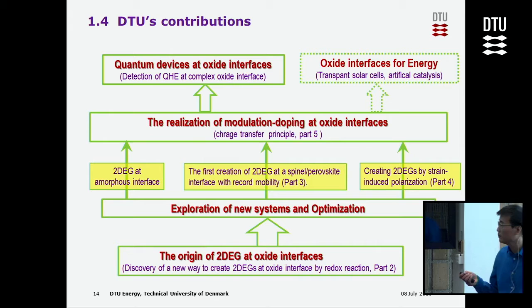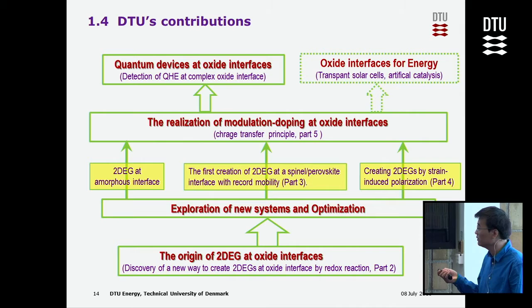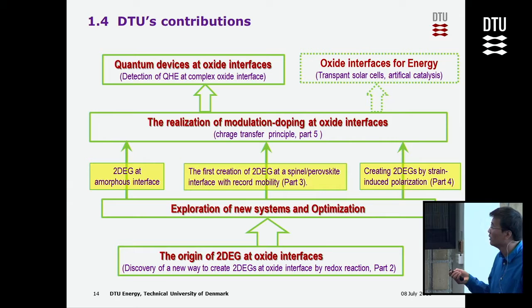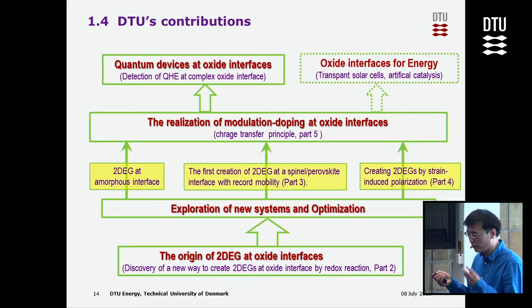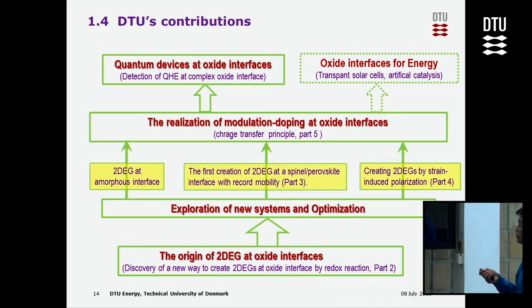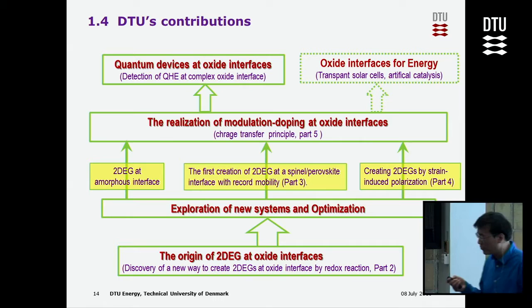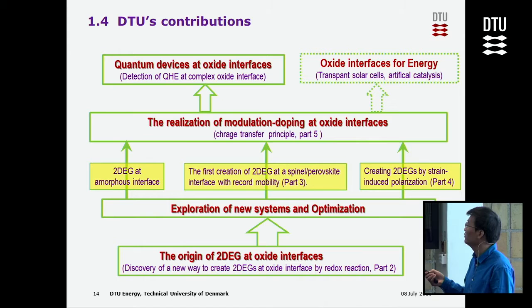Our DTU contributions will be as follows: we start from understanding why the interface becomes conducting, then we build up three nice systems each with its own competences. We then develop a universal principle called modulation doping for this field, which opens new opportunities to research quantum devices and quantum transport at oxide interfaces. It can also be used for energy applications such as transparent solar cells and artificial catalysts.